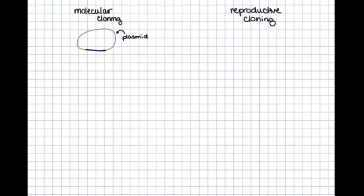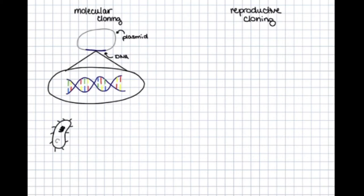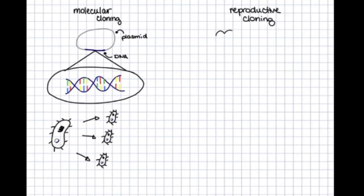This replication is carried out through plasmids or small circular pieces of DNA in bacteria. When the bacteria reproduce, they reproduce the plasmid and the DNA inside of it as well.